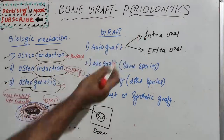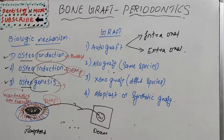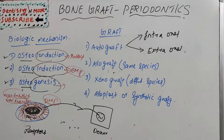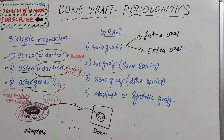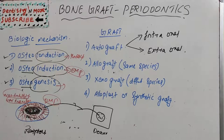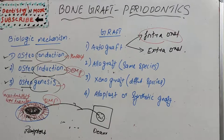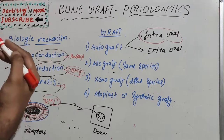There are four types of grafts: autograft (intraoral and extra-oral), allograft (taken from the same species), xenograft (from a different species), and alloplast or synthetic graft. An autograft is taken from the same person. Intraoral sites include healing extraction sites, edentulous ridges, bony growths such as exostosis, maxillary tuberosity, the chin, and bone removed during osteoplasty and osteotomy.